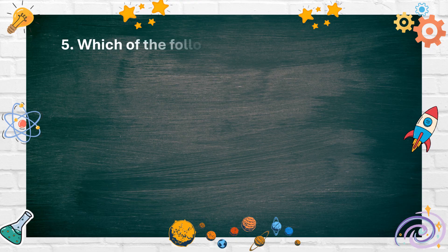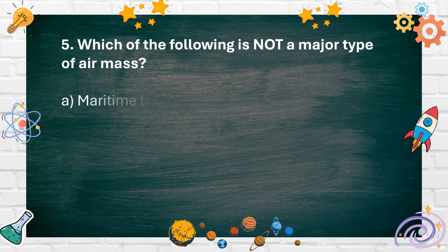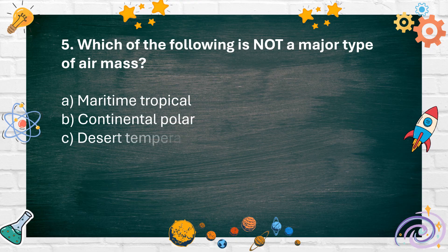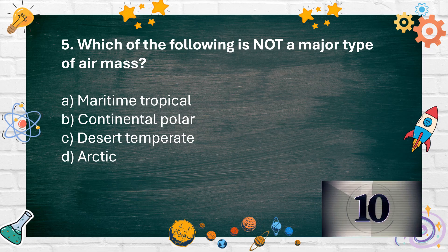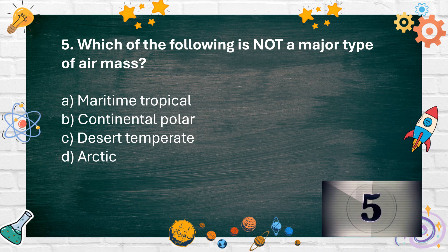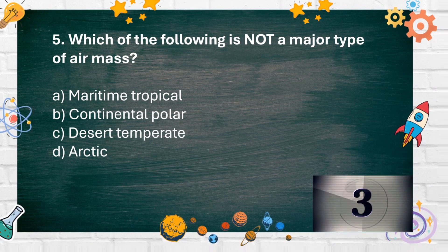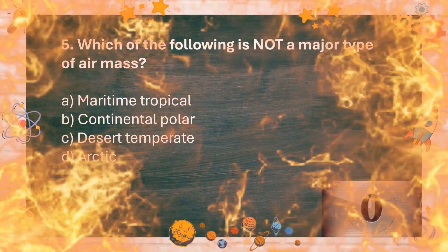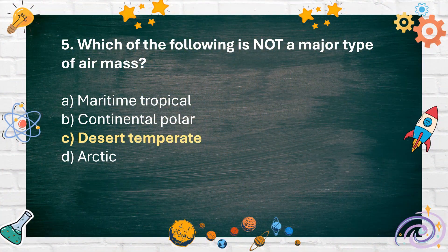Number 5. Which of the following is not a major type of air mass? A. Maritime tropical, B. Continental polar, C. Desert temperate, D. Arctic. The answer is C. Desert temperate.